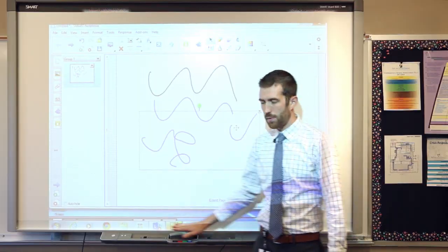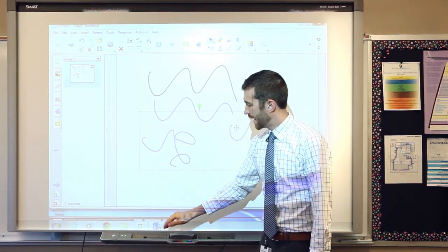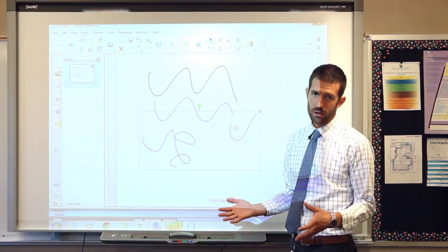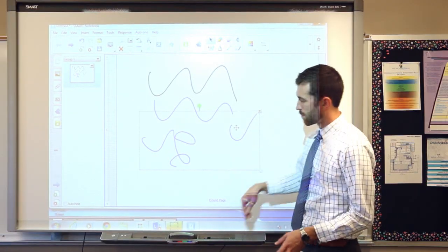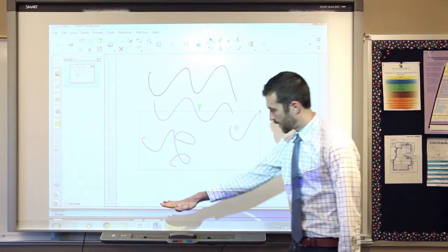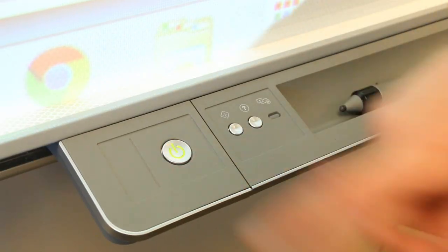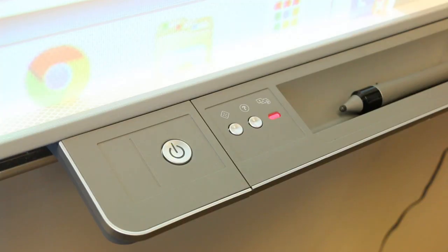The only other difference here on the pen tray that you should be aware of is that there is a power button. The elementary board automatically comes on when you turn on your computer. However with this board, if you press the power button, it will turn off the power and the board is not usable. When you click the power button on, it will give it just a minute to connect with your computer and then it will be ready to go.